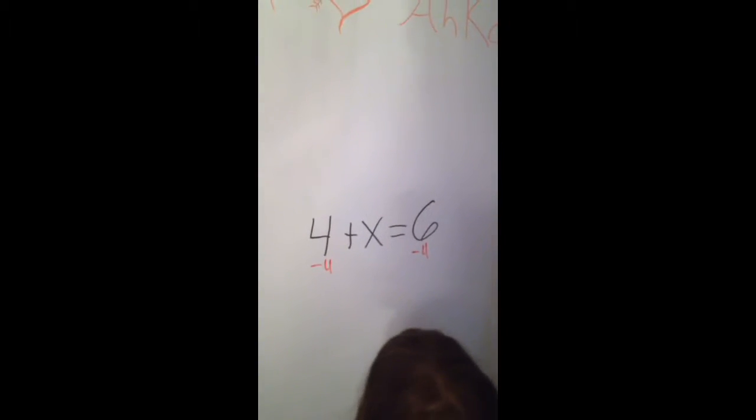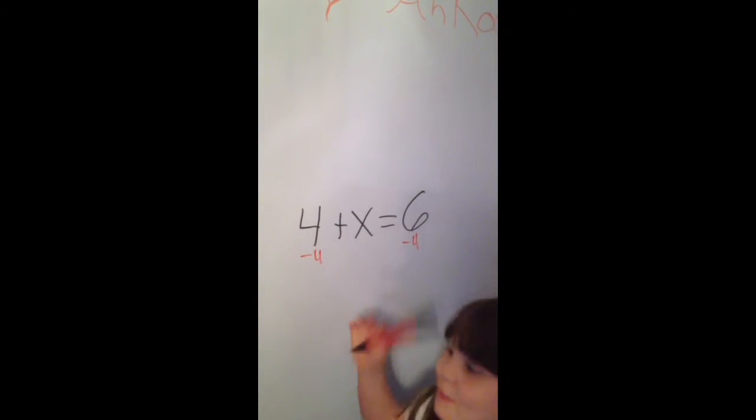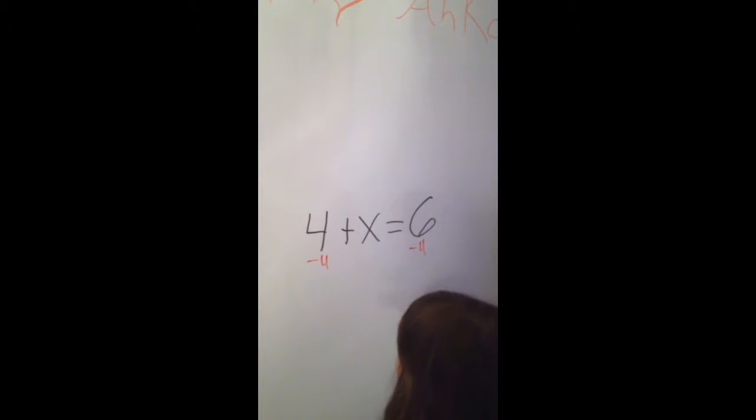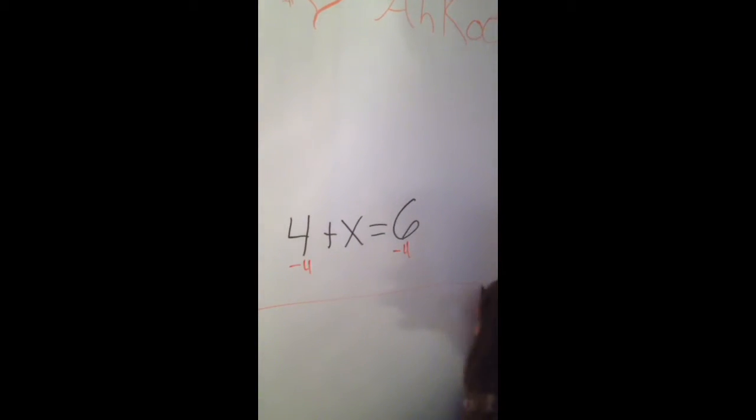Okay, and then the x is a mysterious number so we don't know it. So we did the two minus 4's. Now we draw a line.